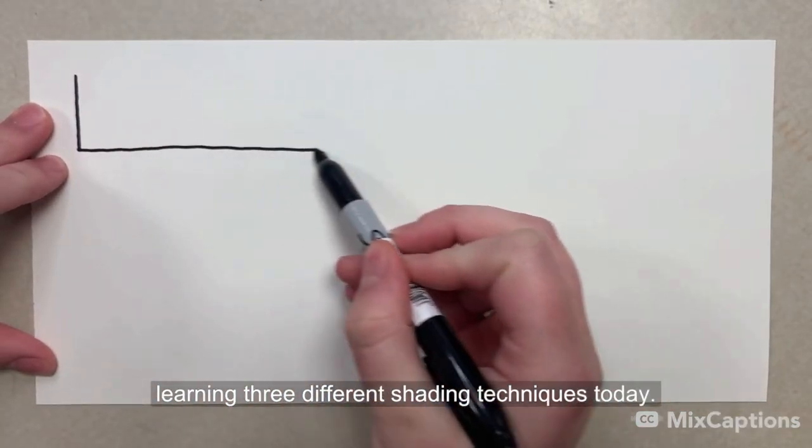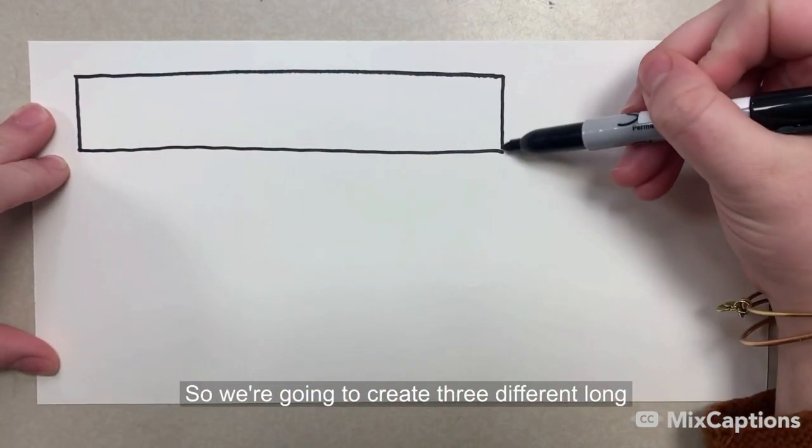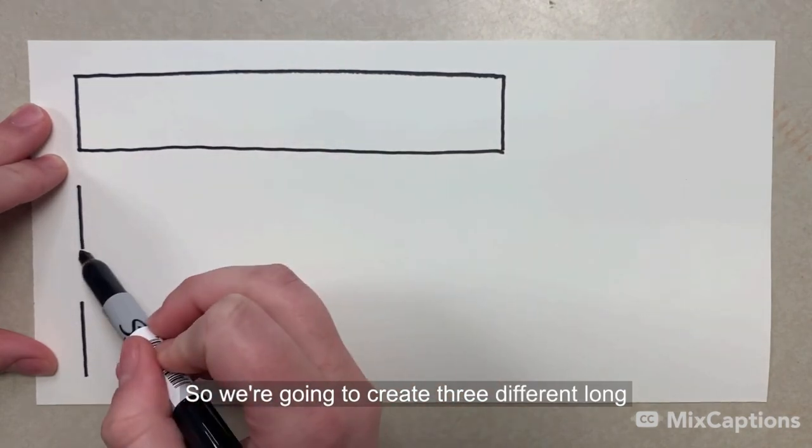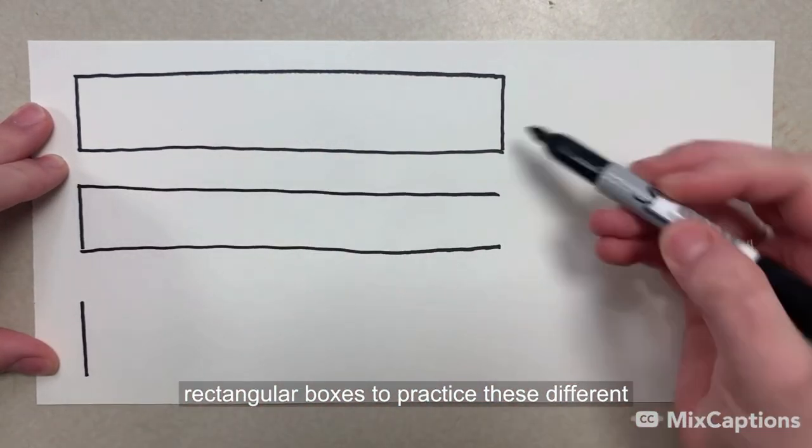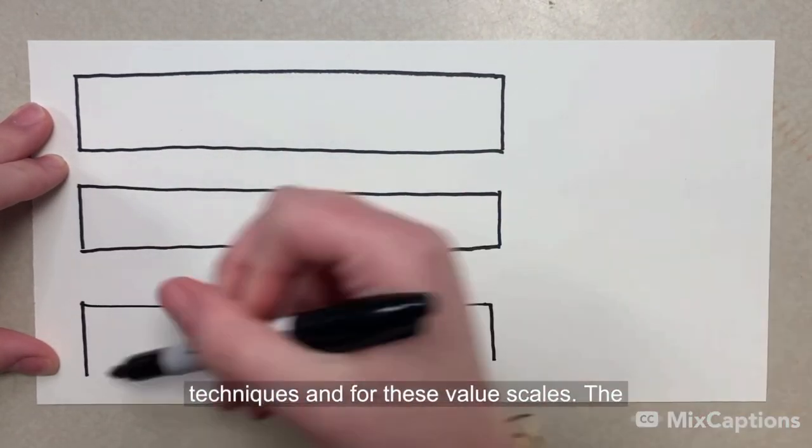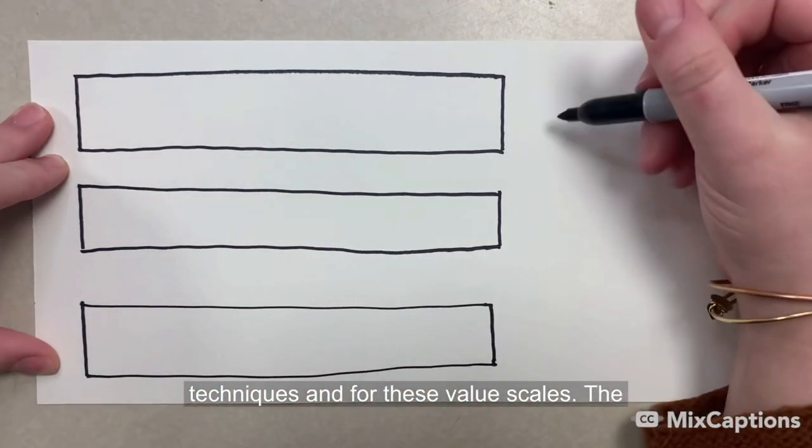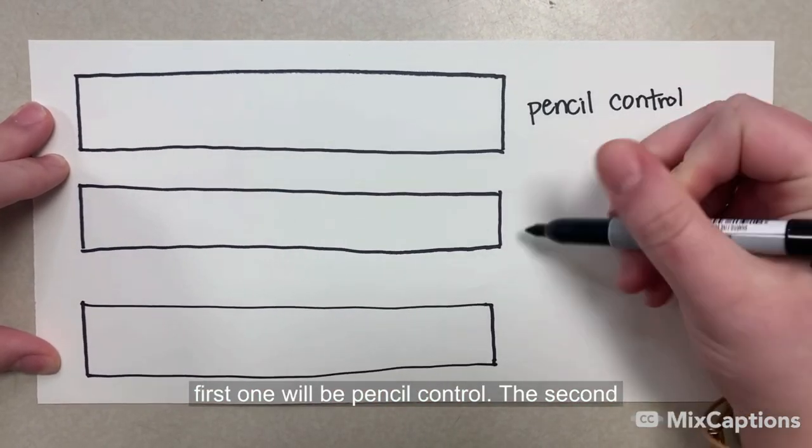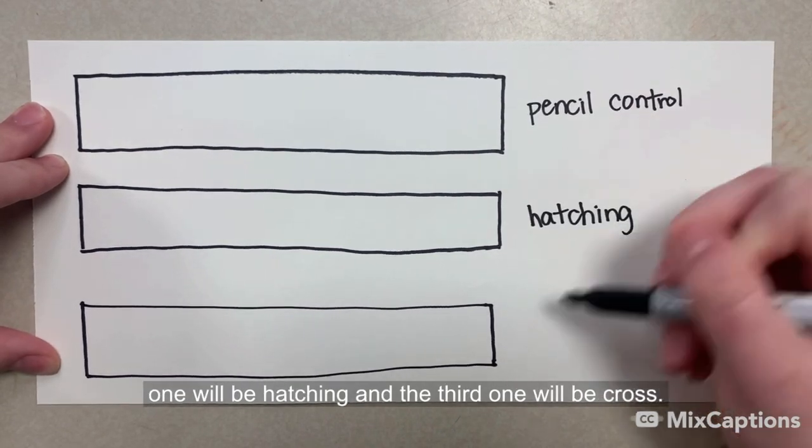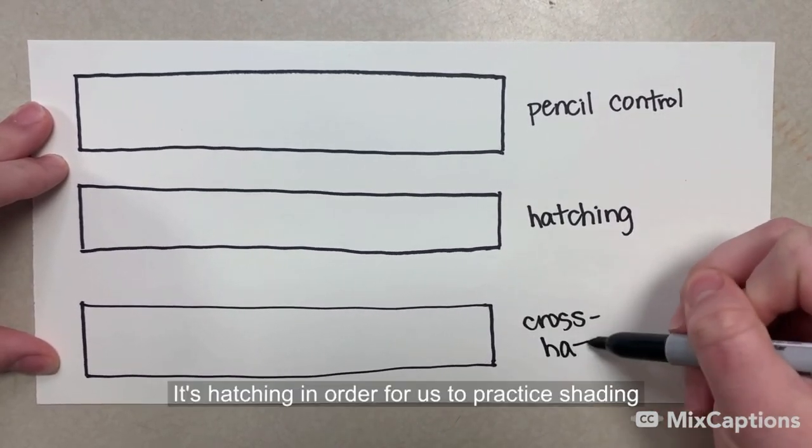We're going to be learning three different shading techniques today. So we're going to create three different long rectangular boxes to practice these different techniques in for these value scales. The first one will be pencil control. The second one will be hatching. And the third one will be cross-hatching.